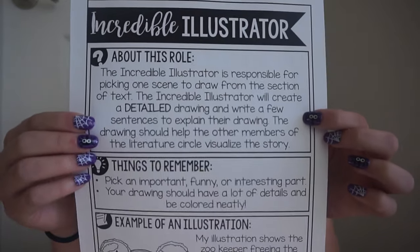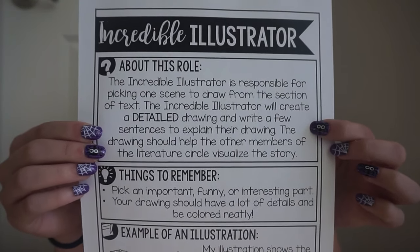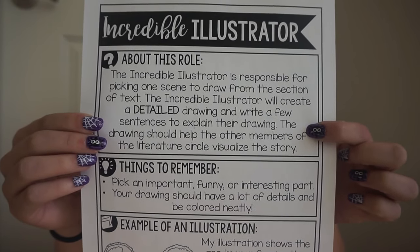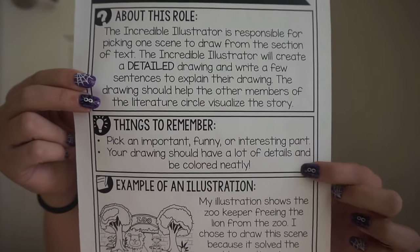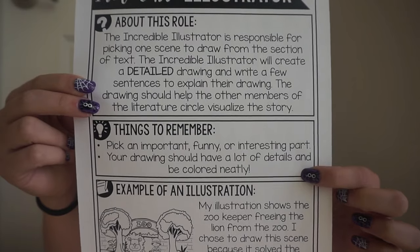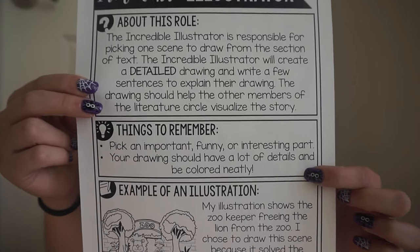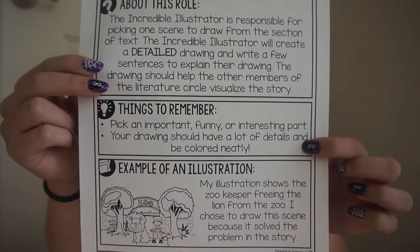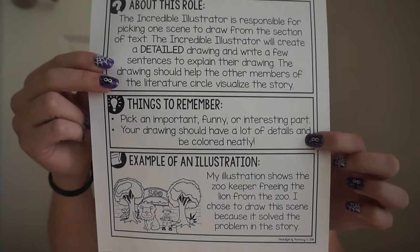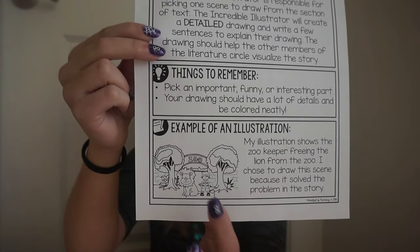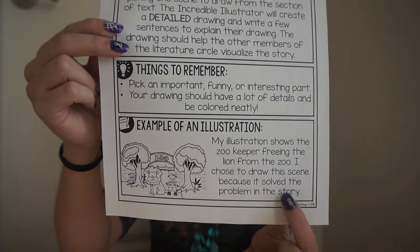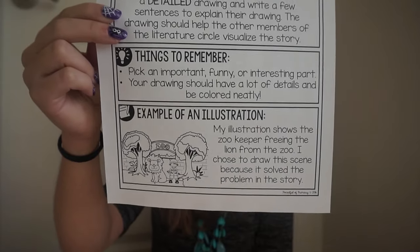The incredible illustrator is responsible for picking one scene from the text, creating a very detailed drawing, and writing a couple of sentences to explain their drawing. Things to remember: pick an important, funny, or interesting part, and their drawing needs to have a lot of details and be colored very neatly. I stress that they have to take their time with this. I have this available both in black and white and in color, with example sentences explaining the illustration.